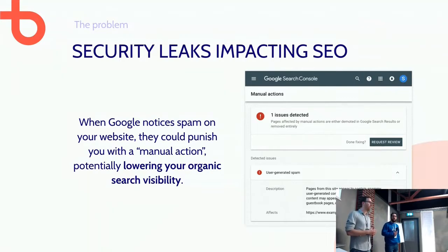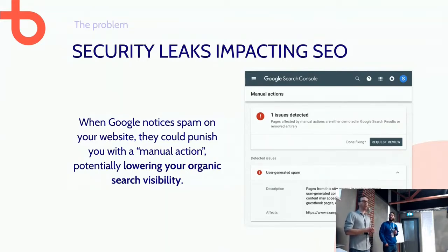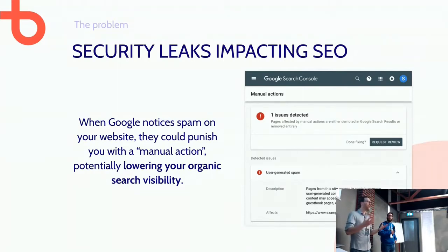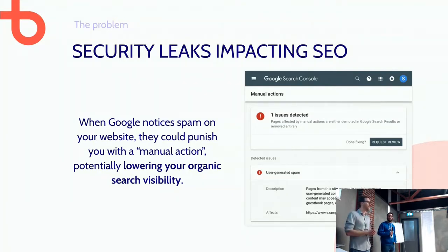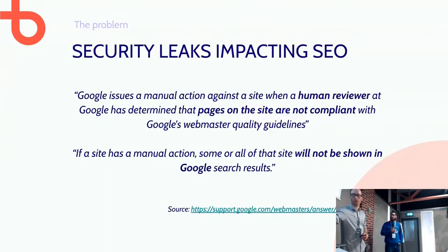A manual action means an employee from Google actively lowered your website's search visibility. Once you have something like this, it instantly reduces the amount of organic impressions you get, and it's pretty hard to get rid of. If you have a good-performing web shop and you get hit with a manual action for a couple of weeks, it could mean thousands or even millions in lost revenue — just because your public file upload wasn't secure.